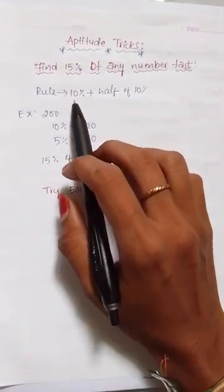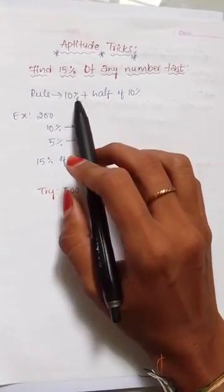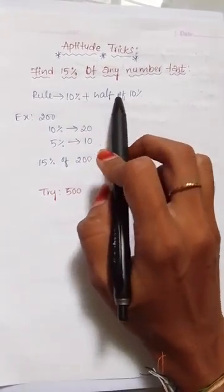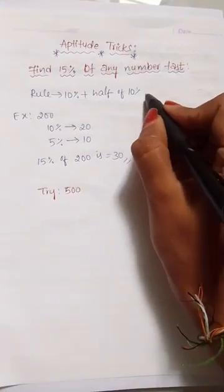Here is the rule. For 15%, you have to divide it as 10% and half of the 10%. That will be 15%.